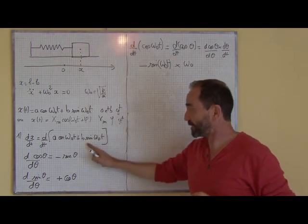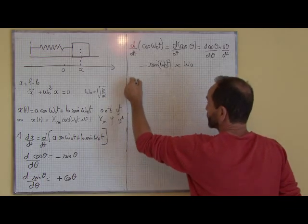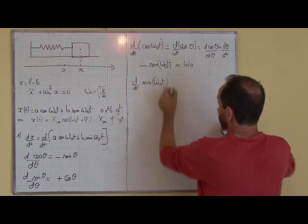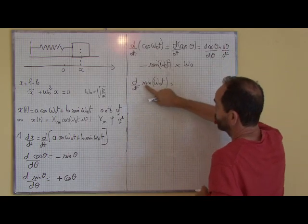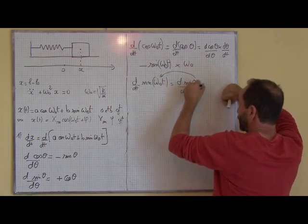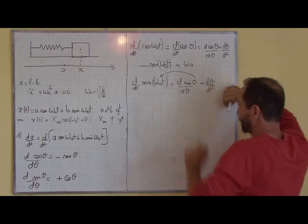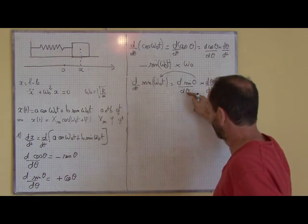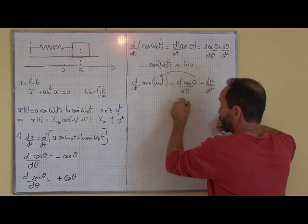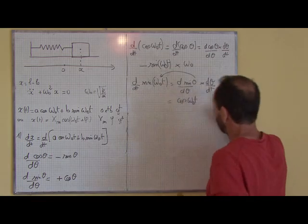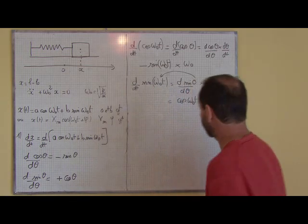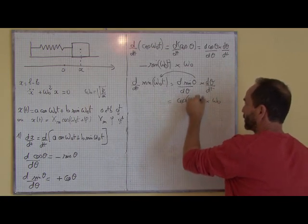Deuxième chose : si on dérive sin(ω₀t) par rapport au temps, on dérive d'abord le sinus — c'est la dérivée de sin(θ), θ valant ω₀t, par rapport à θ — fois dθ/dt, même chose que précédemment. La dérivée de sin(θ) par rapport à θ, c'est cos(θ). Donc ça nous fait cos(θ), c'est-à-dire cos(ω₀t), fois ω₀.